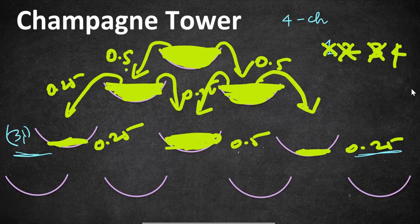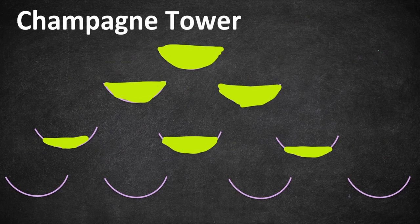So our answer is clearly 0.25, since we have to return the third row first glass which has only a quarter of liquid. The middle glass will have 0.5 because it receives champagne from both glasses above it. This is how the overflow logic works. The approach is to apply a mathematical formula based on these calculations to get our result.